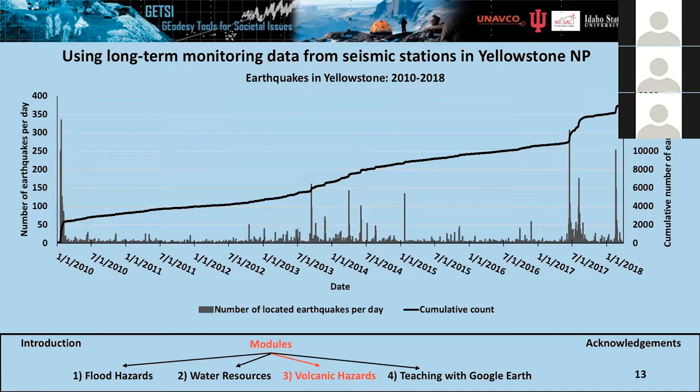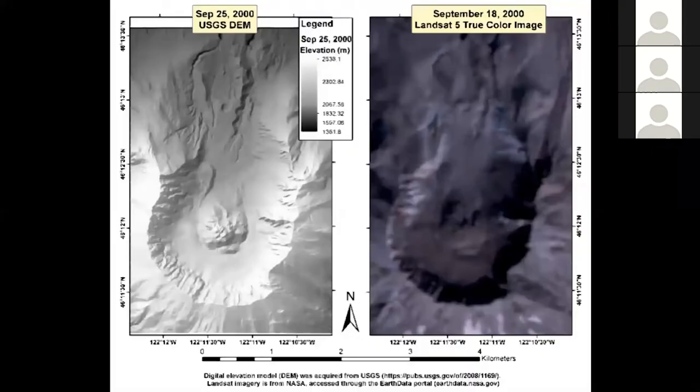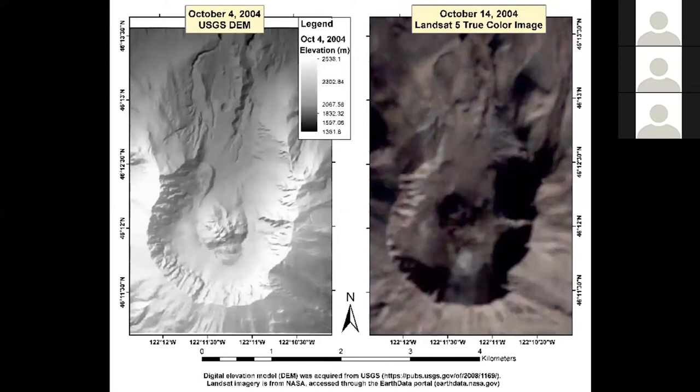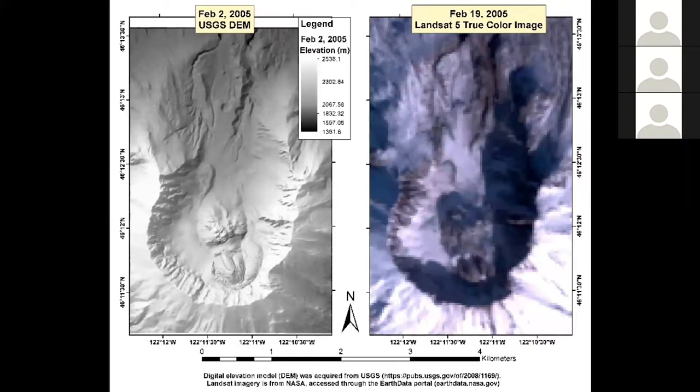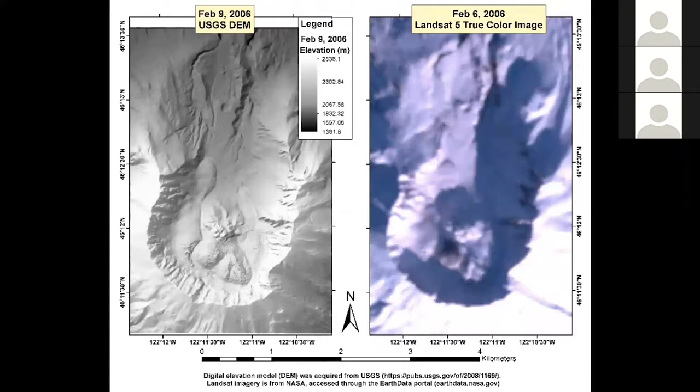Students also look at earthquake data, and my task was to prepare graphs for four decades starting from the 1980s. An animation was also prepared for Mount St. Helens, showing a digital elevation model on the left side and Landsat imagery on the right side to show how the system changes through time. To give some background: in 2004, magma reached the surface, and there was an eruption in 2005 accompanied by earthquakes — the DEM animation shows how the system changed through that period.